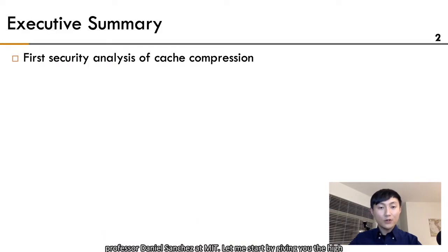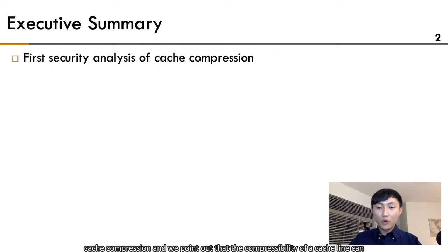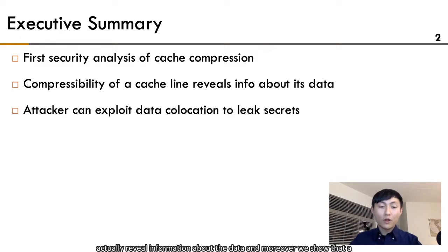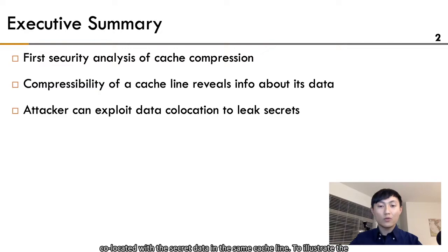Let me start by giving you the high-level picture for this project. We present the first security analysis of cache compression, and we point out that the compressibility of a cache line can actually reveal information about the data. Moreover, we show that a malicious attacker can leak secret data if there is attacker-controlled data co-located with the secret data in the same cache line.